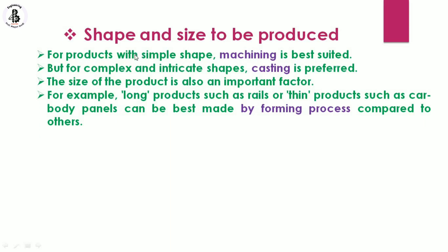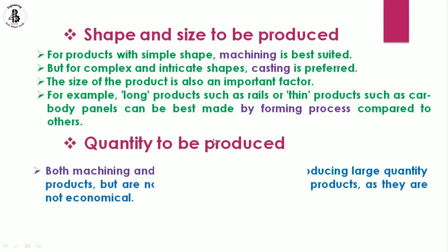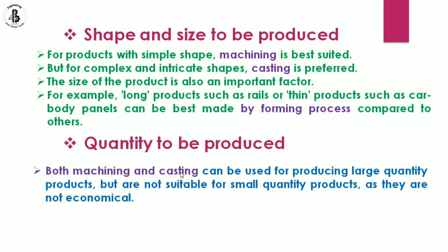So shape and size to be produced is the first factor for selection of production processes. The second factor is quantity to be produced. Both machining and casting can be used for producing large quantities of products, but they are not suitable for small quantities as they are not economical.